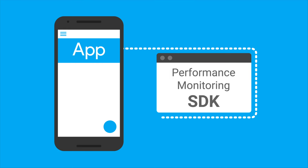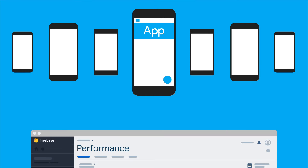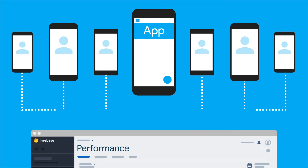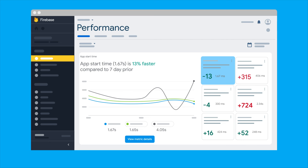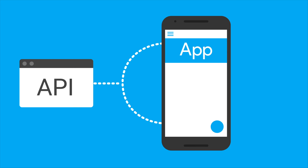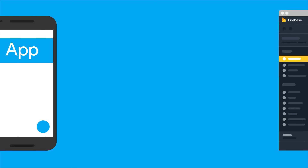By integrating the SDK into your app and without writing any code, your performance dashboard in the Firebase console will collect information about your app's performance as seen by your users. You'll get data about your app's startup time and details about its HTTP transactions. And using the provided API, you can instrument your app to measure those critical moments that you want to understand and improve.